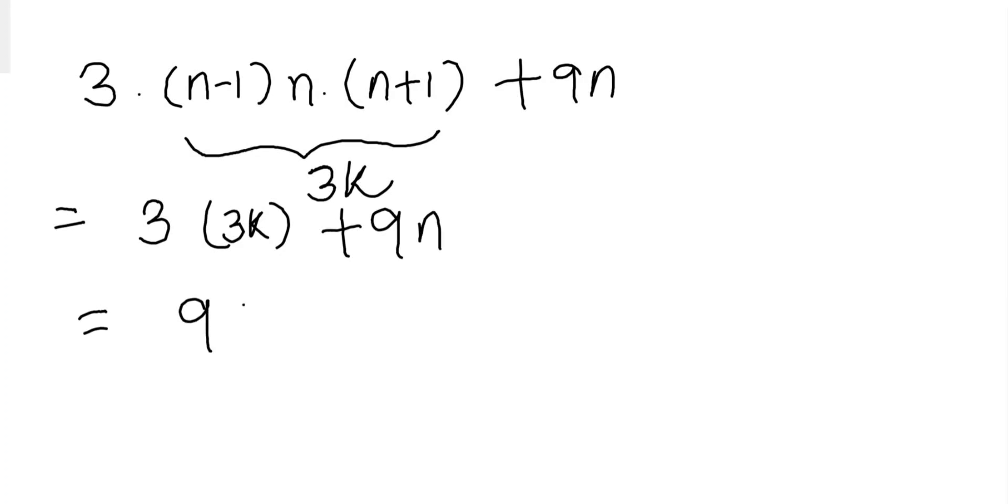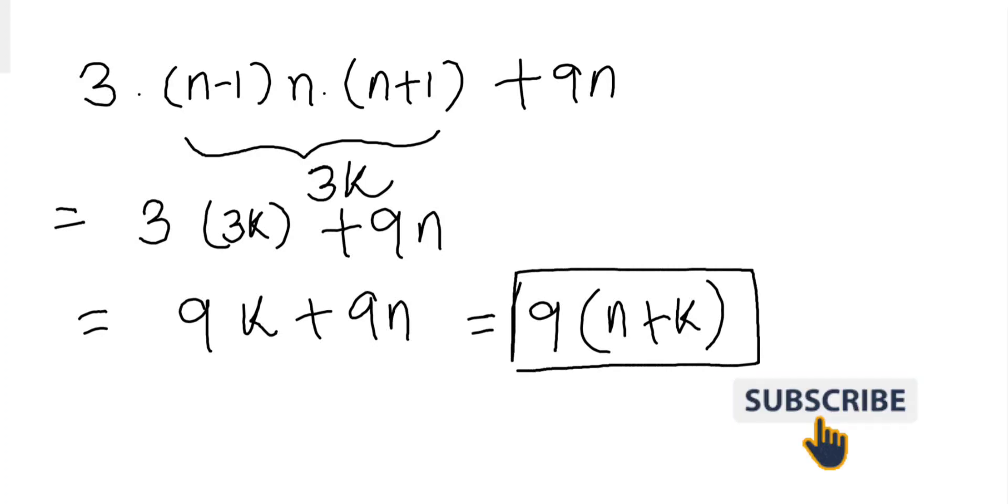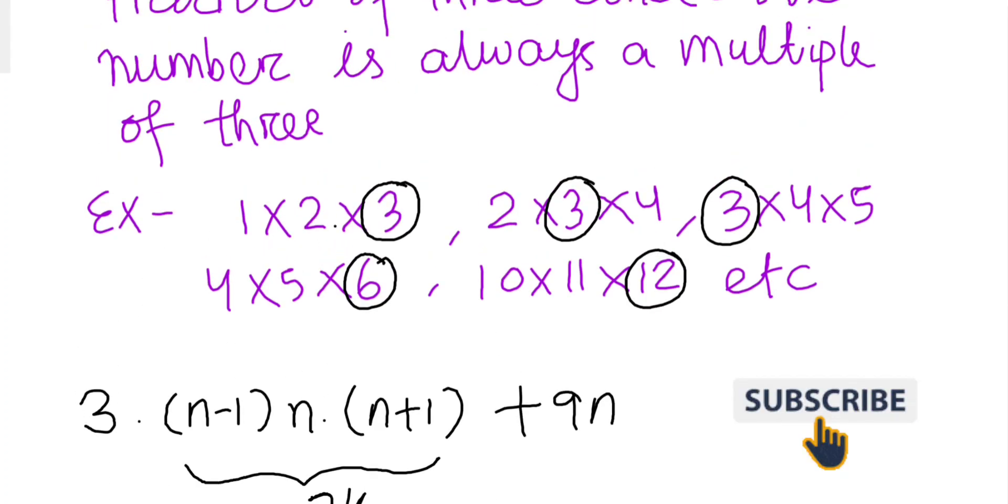So simplifying this gives us 9k plus 9n, and this gives us finally 9 into (n + k). So here you see, the result is a multiple of 9. Hence our statement is proved.